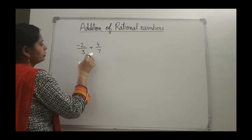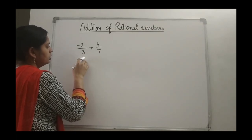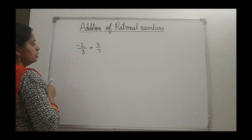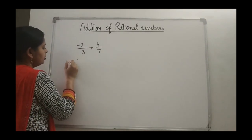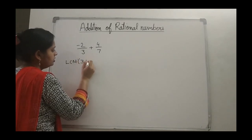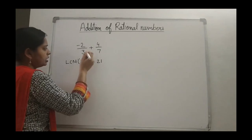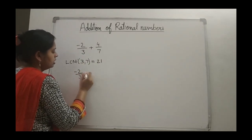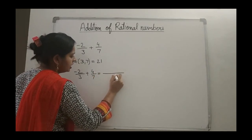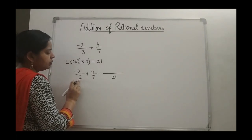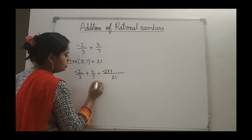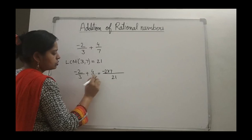Now if you are having rational numbers with different denominators, in fractions we make the denominators common by taking the LCM. So here also you will do the same thing. You have to take the LCM of 3 and 7 because these are the denominators, and the LCM will be 21. So minus 2 by 3 plus 4 by 7 will be equal to — denominator is LCM 21. In 3, what do we multiply? 3 sevens are 21, so in minus 2 we multiply by 7. And 7 threes are 21, so in 4 we do 4 into 3.